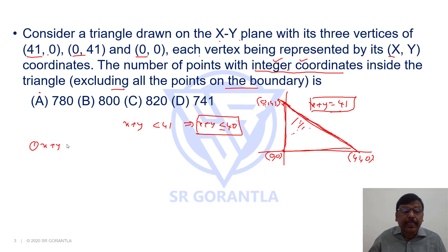Let's say first possibility: if x + y = 40, what are all the possibilities? Can I take x = 0 and y = 40? If I take x = 0, then we are there on this line. So we want to exclude all the points on the boundary means x can't be 0, y can't be 0.